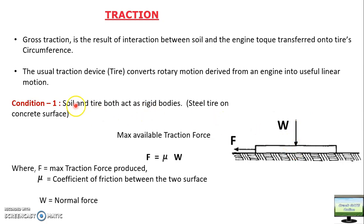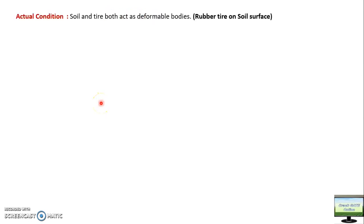But in our actual condition, our soil will also be deformable, and at the same time your pneumatic rubber tyre will also be deformable. So the actual condition will be a deformable tyre on a deformable surface. In that case, the previous condition — mu times W or W times tan theta — will still hold true, but at the same time some additional things will come into play.